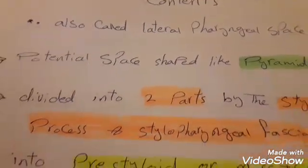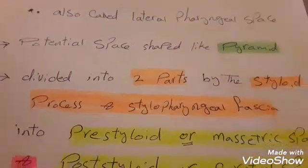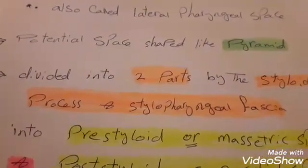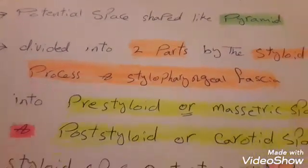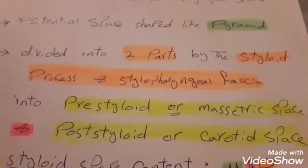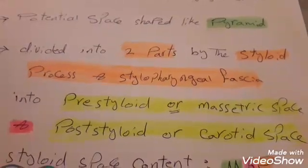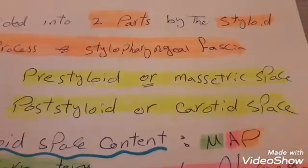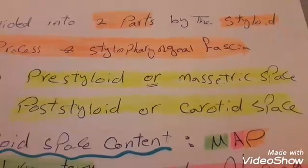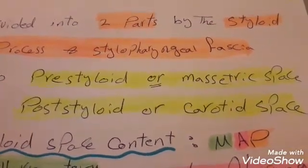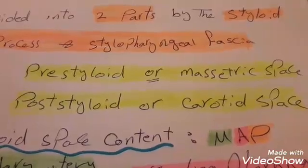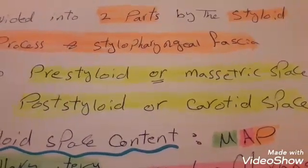It is divided into two parts by the styloid process and the stylopharyngeal fascia. These two parts are the pre-styloid, also called mesoteric space, and post-styloid, or carotid space. Make sure not to confuse it with the carotid triangle — link below to my video about the carotid triangle.